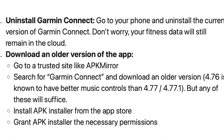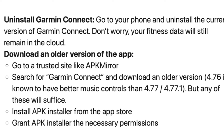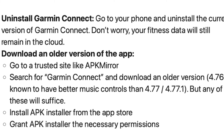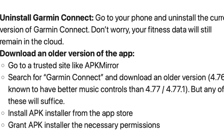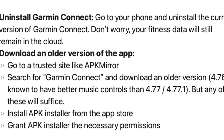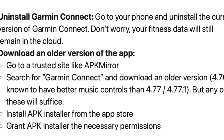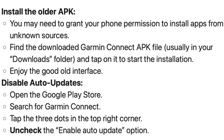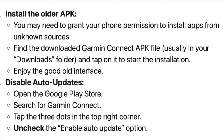On some phones, you may need to install APK Installer from the App Store. However, most modern Android phones allow direct installation of APK files, so for them this would be an unnecessary step. Next, you need to install the old version of Garmin Connect — the one that you downloaded.